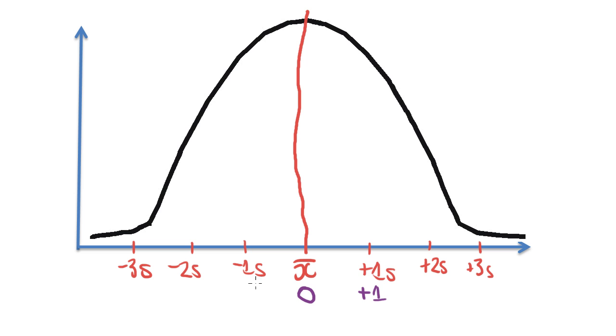A Z-score of positive two means you were two standard deviations up, and a Z-score of positive three means you were three standard deviations up. And it works the same going down. A negative one Z-score means you were one standard deviation below the mean. A negative two Z-score means you were two standard deviations below the mean, and a negative three Z-score means you were three below.